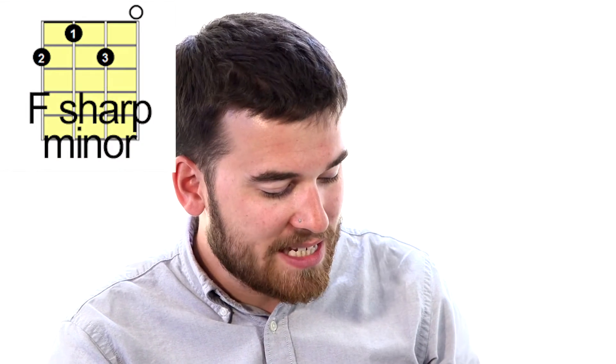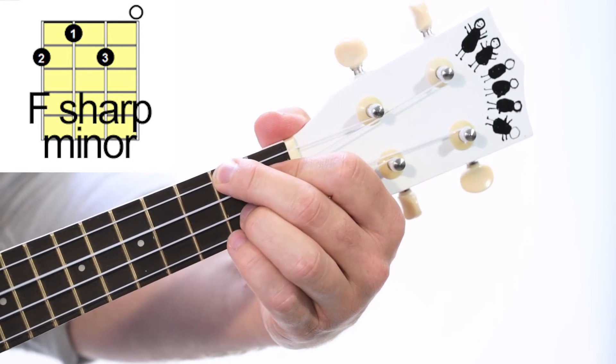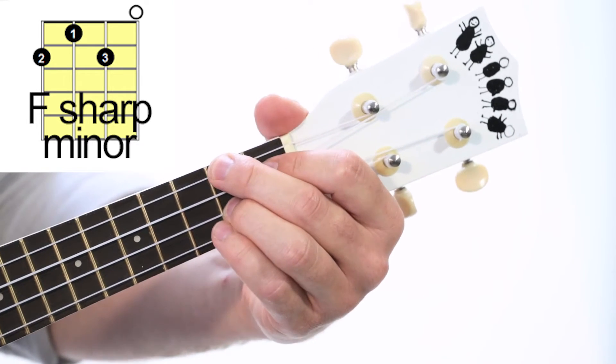Okay, for the chorus section we're going to be learning the chord F sharp minor. So that's second finger on the second fret. First finger on the first fret. And third finger back on that second fret.